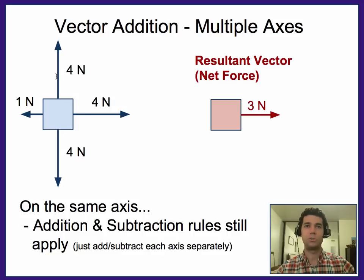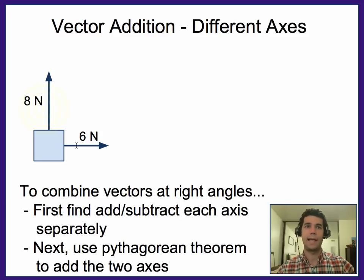Well, what happens if we have a resultant vector in both axes, in other words this one didn't cancel out from that one. So that scenario might look something like this, where we had eight in the upward direction, and six in the right direction.